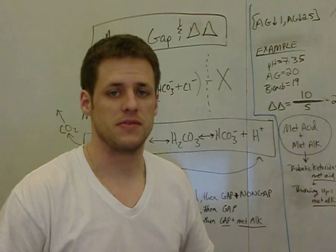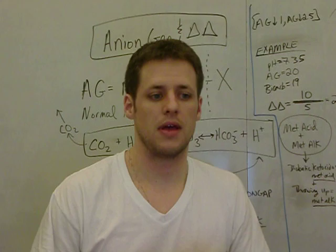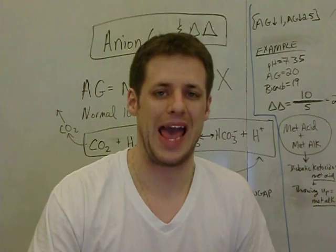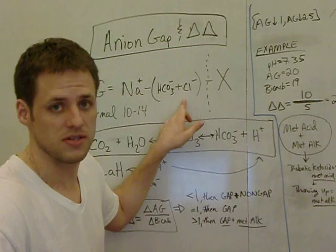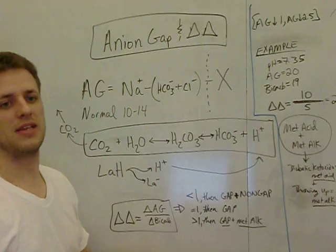The anion gap, you probably know, is simply a way of measuring extra ions in the blood, particularly when you have a metabolic acidosis. To get the anion gap, you just take total sodium concentration and subtract out the sum of the bicarb and the chloride concentrations. A normal anion gap is about 10 to 14.